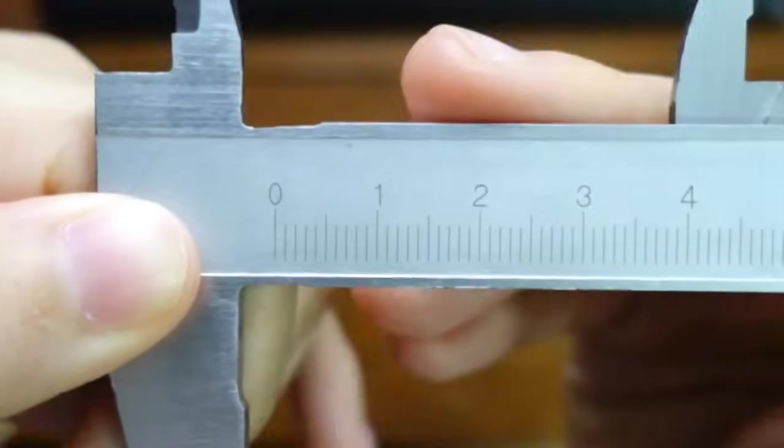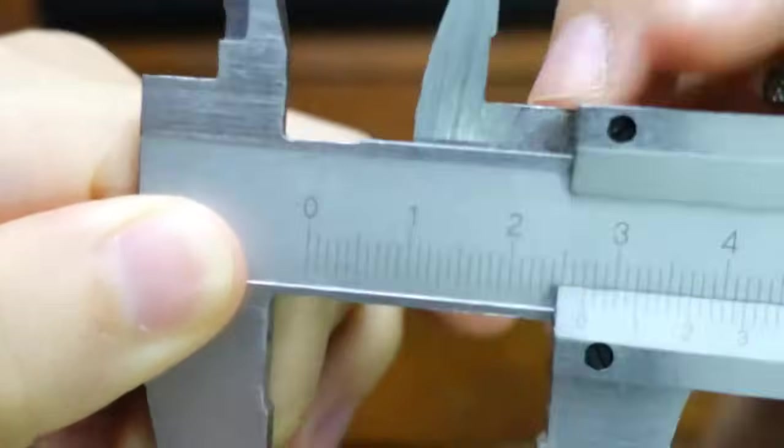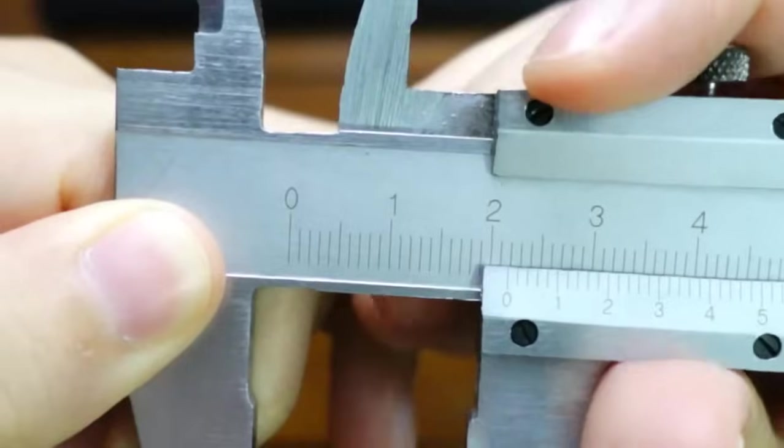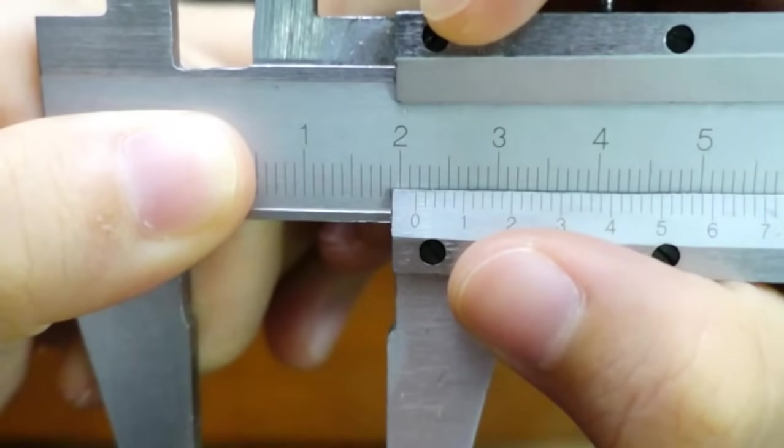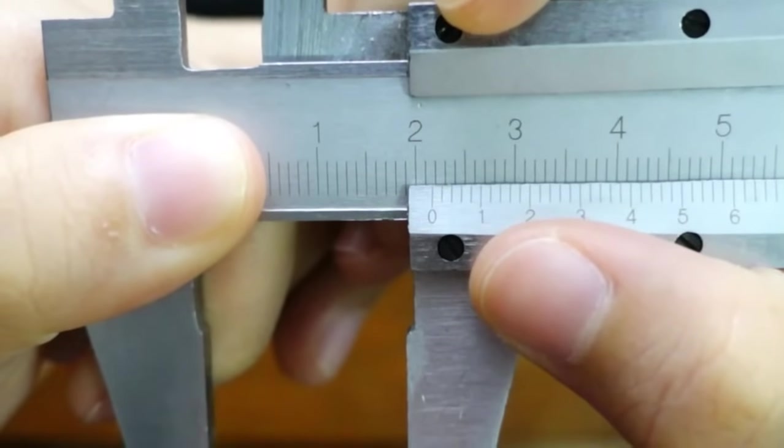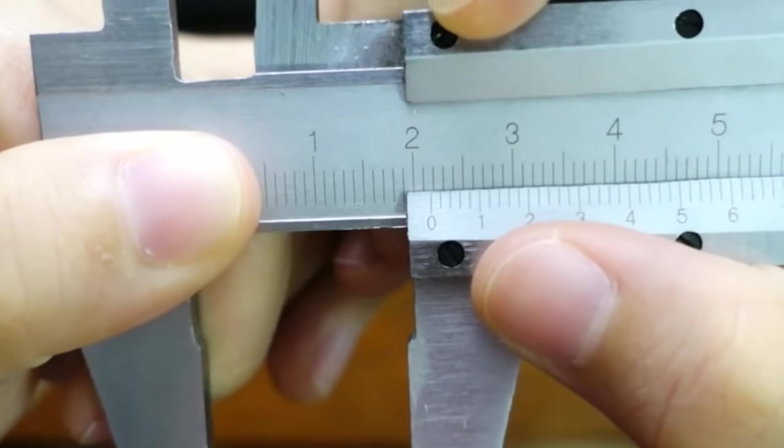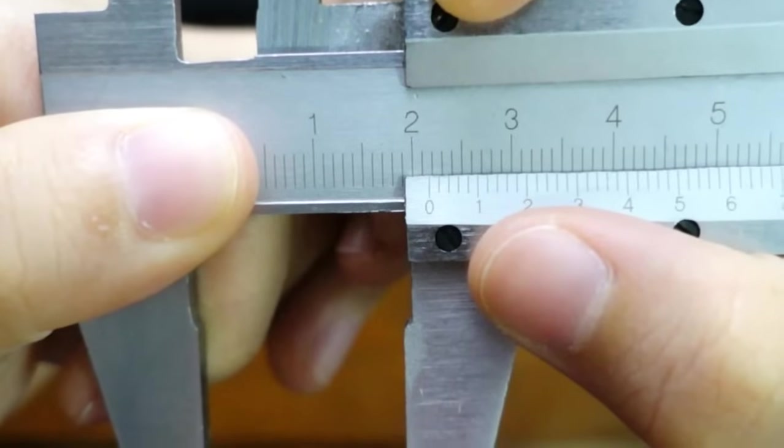For example, if I have my reading something like this. Okay let's see if we can see that. You see where the zero is pointing at? Is this 2.1 or 2.2 or somewhere in between? Looks like somewhere in between.